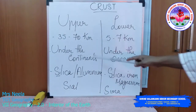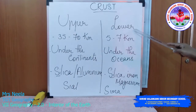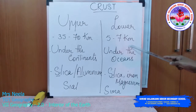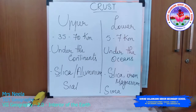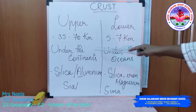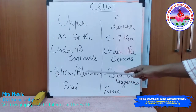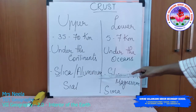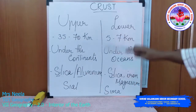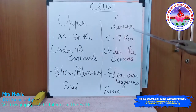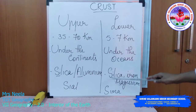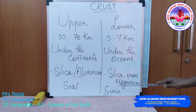The upper crust is seen beneath the continents. The lower crust is about 5 to 7 kilometers in thickness and it is seen under the ocean beds. The upper crust is mainly made up of minerals silica and aluminium — Si from silica and Al from aluminium — forming SIAL. So the upper crust is also called SIAL. In the lower crust you can find minerals such as silica, iron, and magnesium — Si from silica and Ma from magnesium — forming SIMA. So the lower crust is also called SIMA.